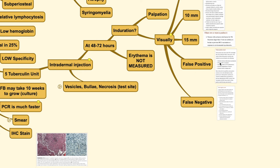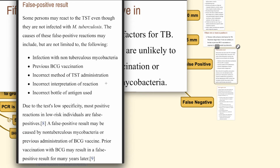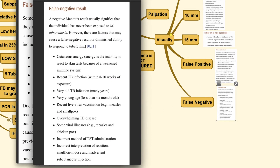Beware of false positives and false negatives in this test. False positive results may be caused by infection with other non-tuberculous mycobacteria, previous BCG vaccination, incorrect method of tuberculin administration, or incorrect interpretation of the reaction. False negative results can be caused by cutaneous anergy — the inability of the skin to react to any skin test due to a weak immune system — or by recent TB infection or even very old TB infection.